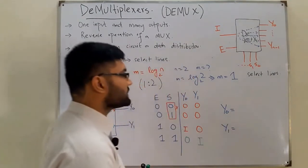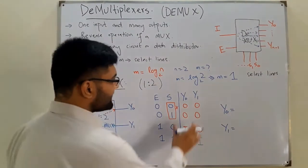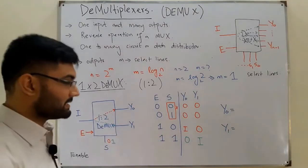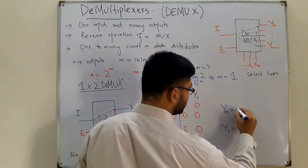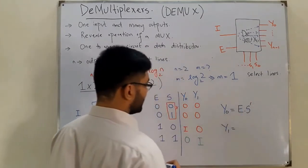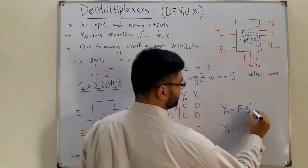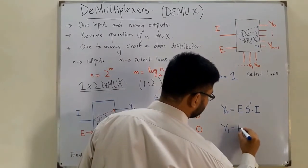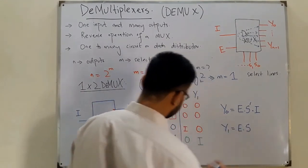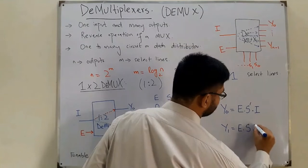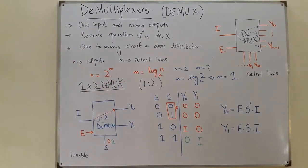We don't need K-maps since the expressions are straightforward. The expression for Y₀ is: Y₀ = E · S' · I. The expression for Y₁ is: Y₁ = E · S · I.